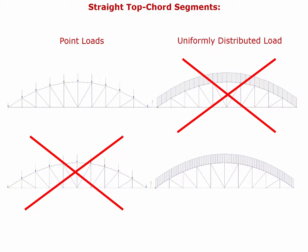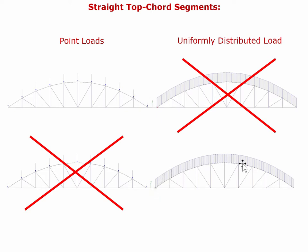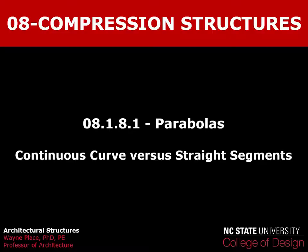In summary: we would like straight segments for the case of point loads on the top joints. We do not want straight segments for a uniformly distributed load. Likewise, for the smooth continuous curve, we do not want point forces — we want the continuous load. It's a simple mnemonic device: straight segments for point forces, which are discrete forces; continuous curvature for continuous load. That ends our video on continuous curve versus straight segments in parabolic arches or bow trusses.